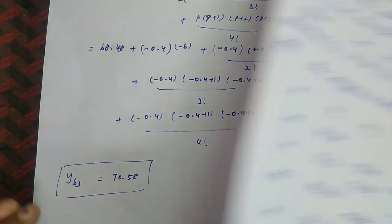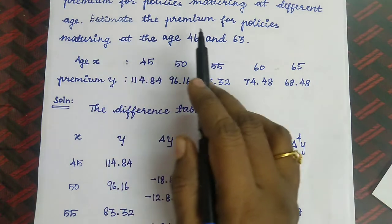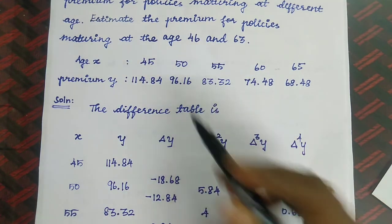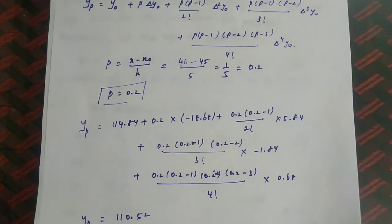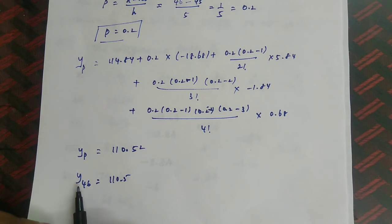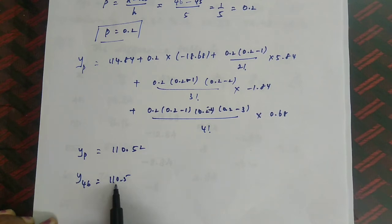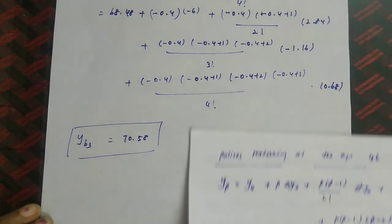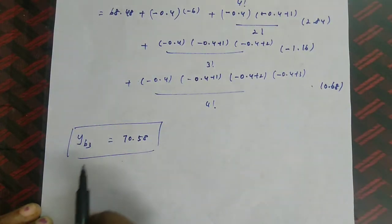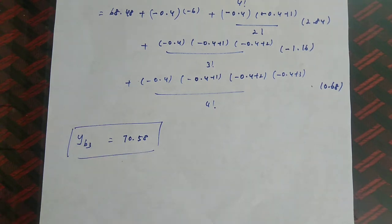In this problem, we used both results because the question asks to estimate the premium for policies maturing at age 46 and 63. For age 46 we used the forward interpolation formula, giving y(46) = 110.5. For age 63 we used the backward interpolation formula, giving y(63) = 70.58. Thank you for watching.